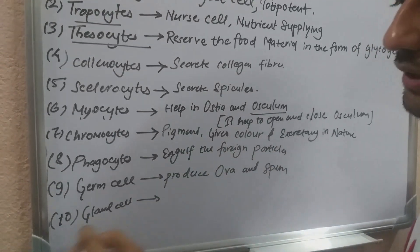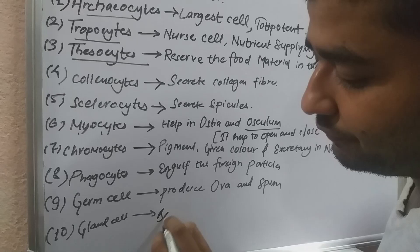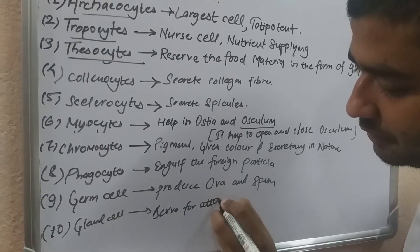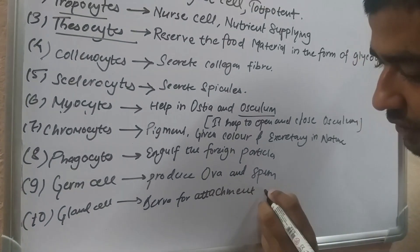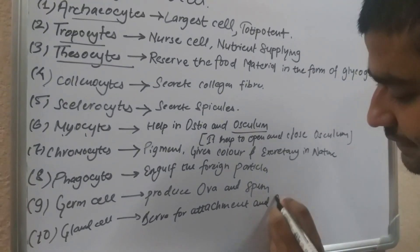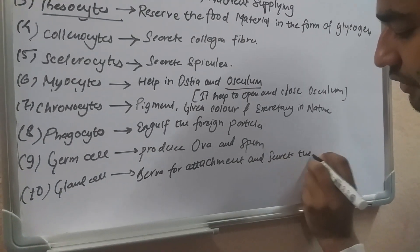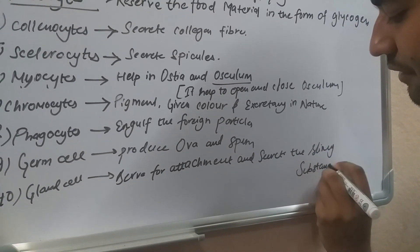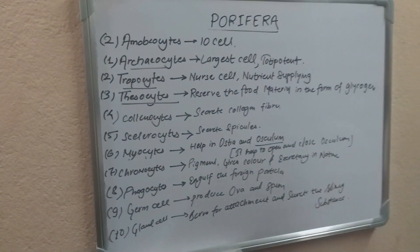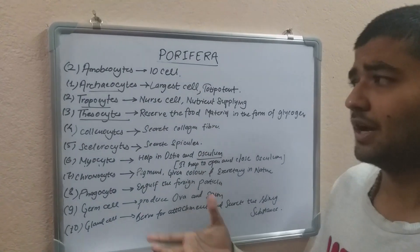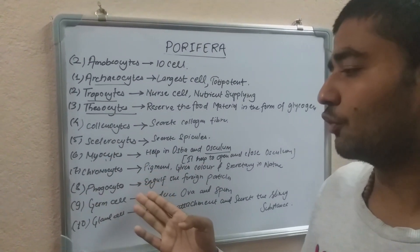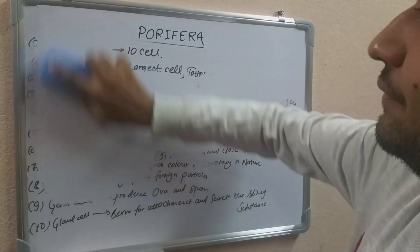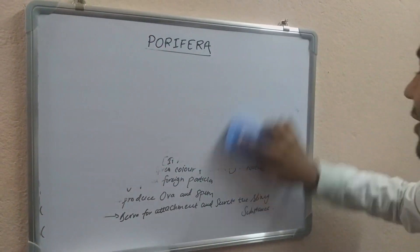There are also gland cells and spongin-secreting cells responsible for attachment. These cells secrete slimy substances.